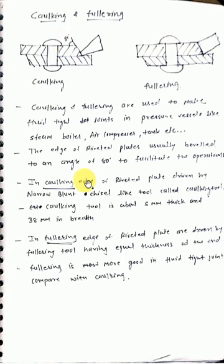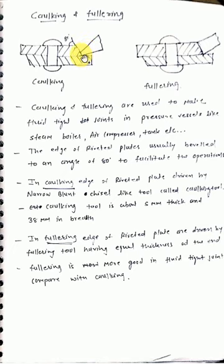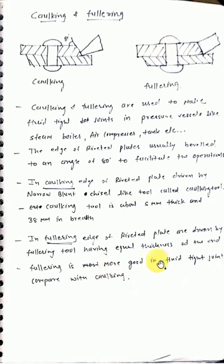In caulking, the edge of the riveted plate is driven by a narrow blunt chisel called the caulking tool, which has a width of 5 mm. The fullering tool has a width equal to the plate thickness — having equal thickness at the end. Fullering gives a better fluid-tight joint compared with caulking, so generally we use fullering.